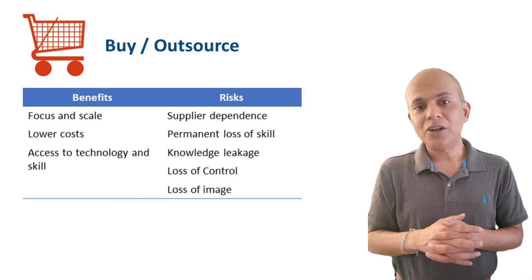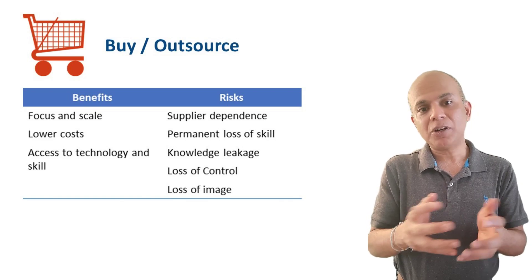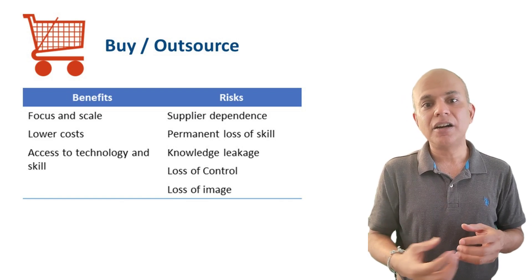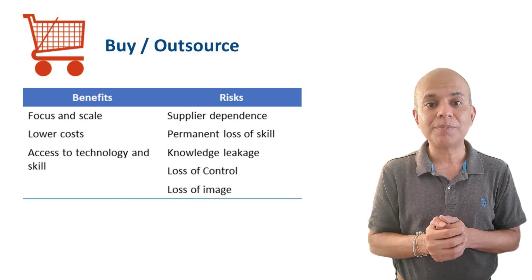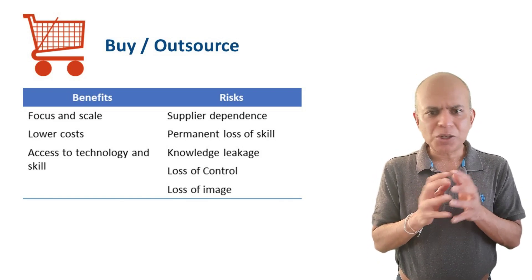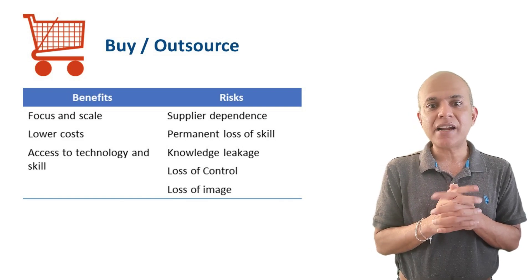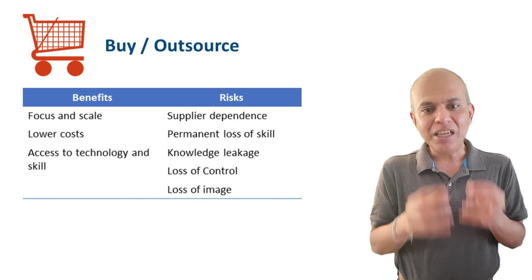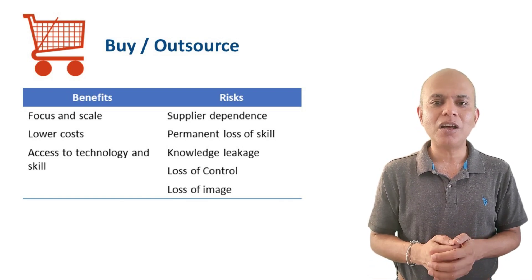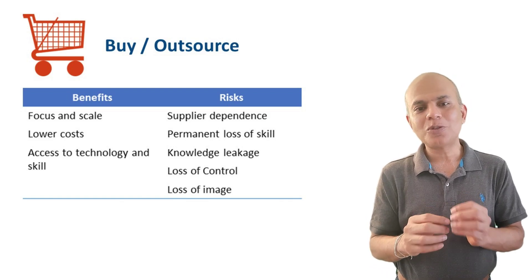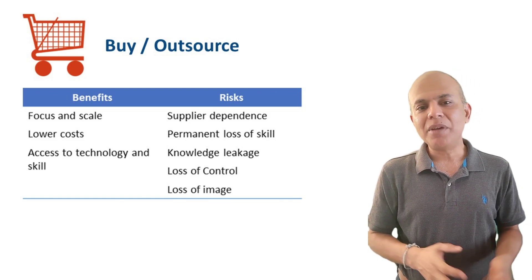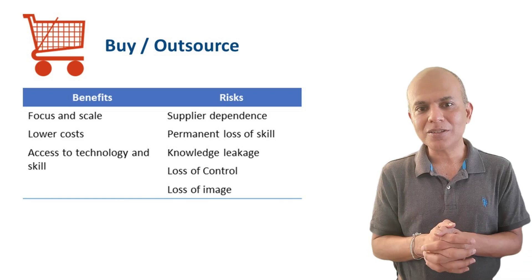Thirdly, there could be knowledge leakage. The Dell and Acer example illustrates how suppliers who are allowed to perform a process can learn it and at some point become a competitor. There is also a belief that we only exercise true control when we do something ourselves — outsourcing means suppliers may not deliver on time, may not use the right raw materials, or may not create the right quality, leading to a potential loss of image.